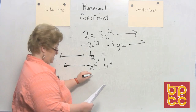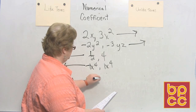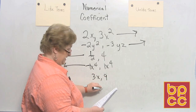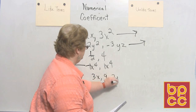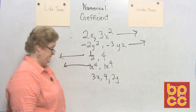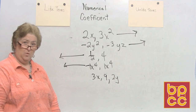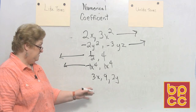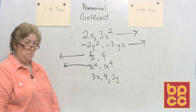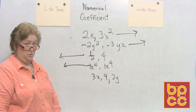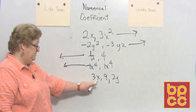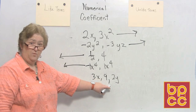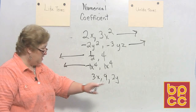Let's try this one — 3x, 9, and 2y. Do any of those belong together? No. You have an x, a number with no exponent whatsoever, and a y. No like terms among them.